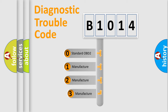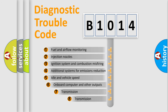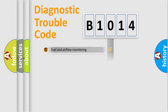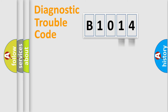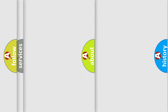If the second character is expressed as zero, it is a standardized error. In the case of numbers 1, 2, or 3, it is a more specific expression of a car-specific error. The third character specifies a subset of errors. This distribution is valid only for the standardized DTC code. Only the last two characters define the specific fault of the group, and this division is valid only if the second character is expressed by the number zero.